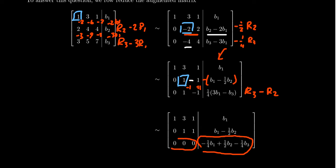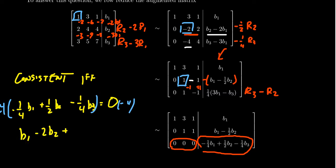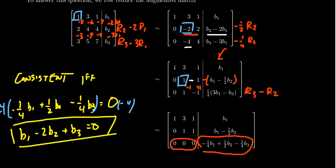The only way this system of equations can be consistent is that the row of zeros on the left must match up with a zero on the right. So this matrix equation is consistent if and only if negative one-fourth b1 plus one-half b2 minus one-fourth b3 equals zero. Multiplying both sides by negative four to clear fractions gives b1 minus 2b2 plus b3 equals zero. This describes exactly which vectors B are in the column space of A.